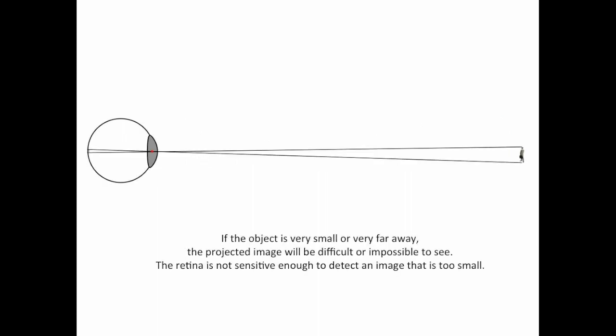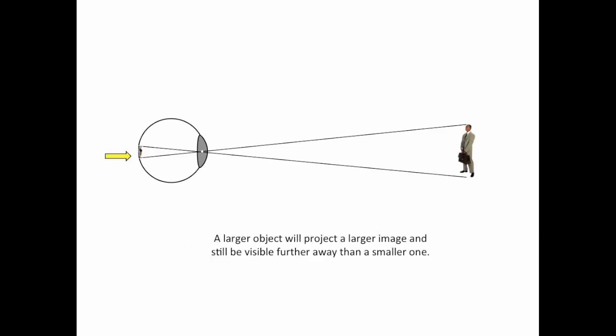If the object is very far away, or very small, the projected image will be difficult or impossible to see. The retina is not sensitive enough to detect an image that is too small. A larger object will still project a larger image and still be visible further away than a smaller one.